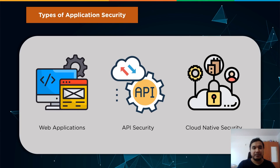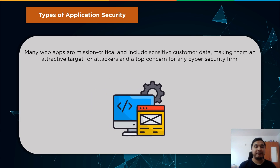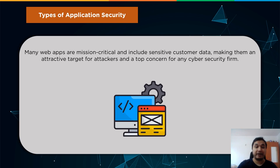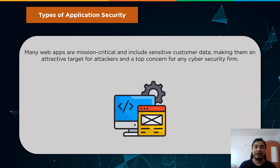The three major types are web application security, API security, and cloud native application security. A web application is a program available through the internet that operates on a web server, accessed by the client using a web browser. These applications by definition must allow connections from clients across unsecured networks, exposing them to a variety of risks. Many online apps are mission-critical and include sensitive customer data, making them an attractive target for attackers and a top concern for any cybersecurity program.